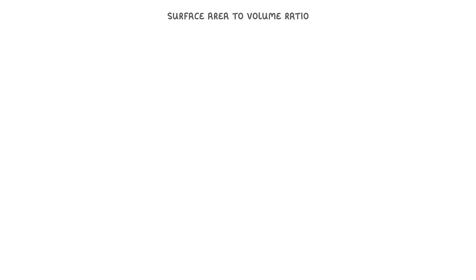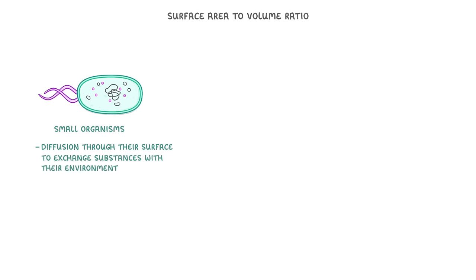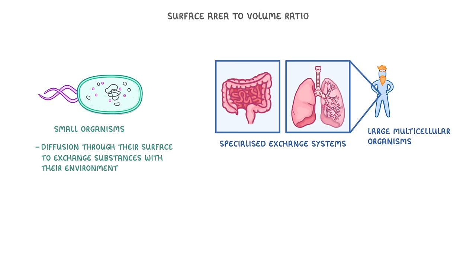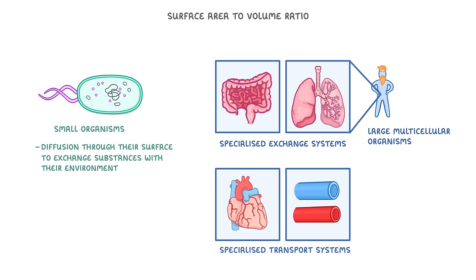In this video we're going to look at the idea of surface area to volume ratio and use it to explain why small organisms like single-celled bacteria can rely on diffusion through their surface to exchange substances with their environment, but large multicellular organisms like ourselves require specialized exchange surfaces like the lungs and intestines to get things in and out of our body, and also require specialized transport systems like the heart and blood vessels to transport those things around.